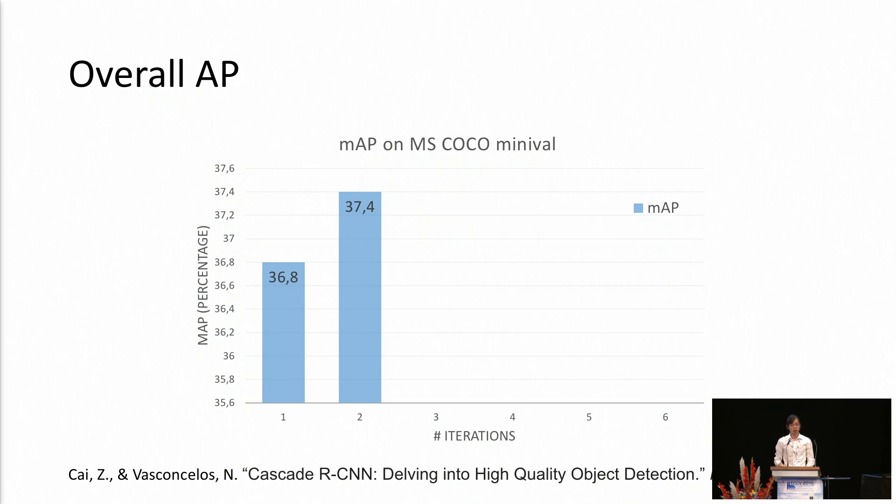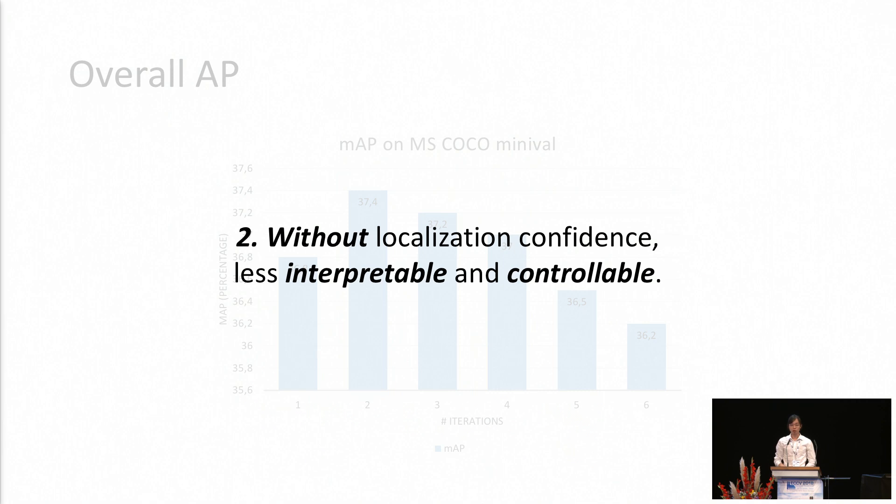The overall AP on the MS COCO dataset is consistent with our finding. We can see that for the first two iterations of the bounding box regression, we find an improvement on the overall AP. However, starting from the third iteration, we find that the overall AP is beginning to drop. This is consistent with the finding in the paper Cascade R-CNN by Tsai and his colleague. In this case, the bounding box regression is actually a black box optimizer for the localization. We have no idea about how confident the model is about this transformation. We even don't know how many iterations we need for the localization. Here, we argue that without localization confidence, the bounding box refinement task is less interpretable and less controllable.